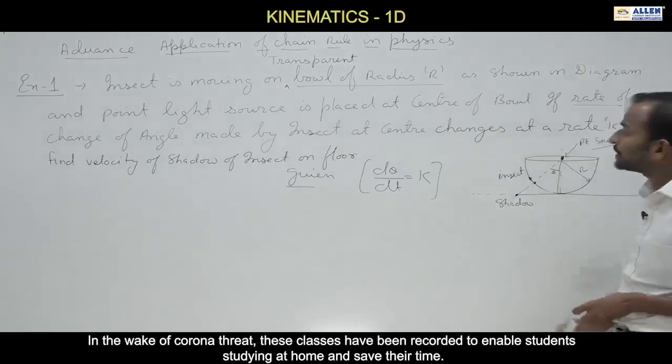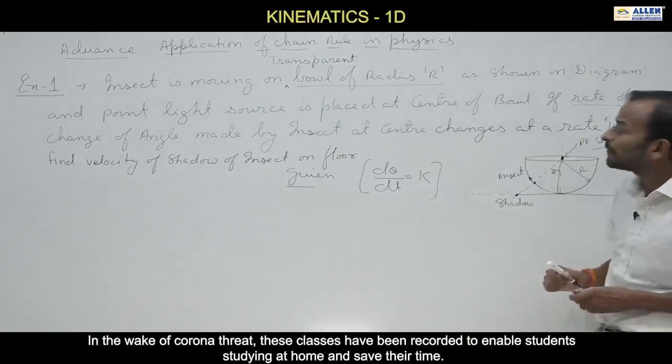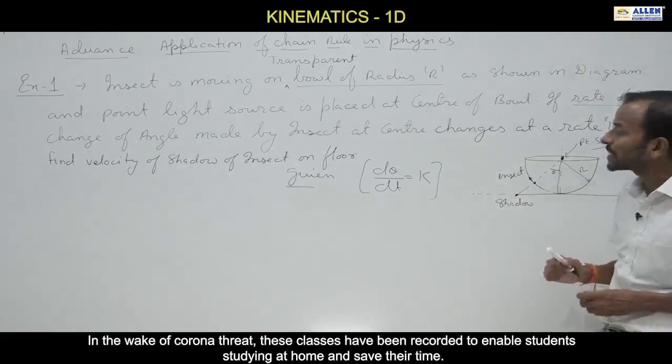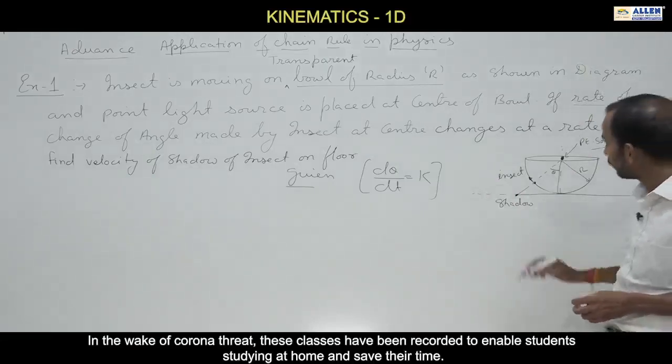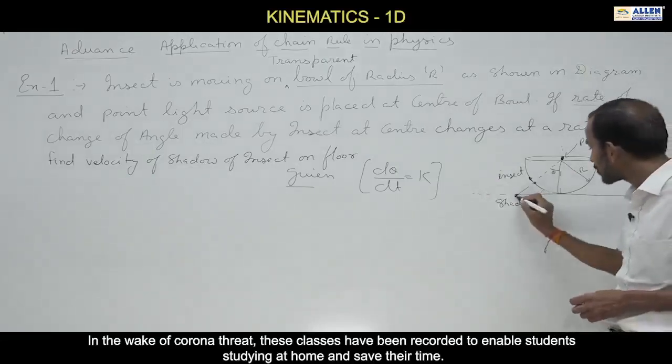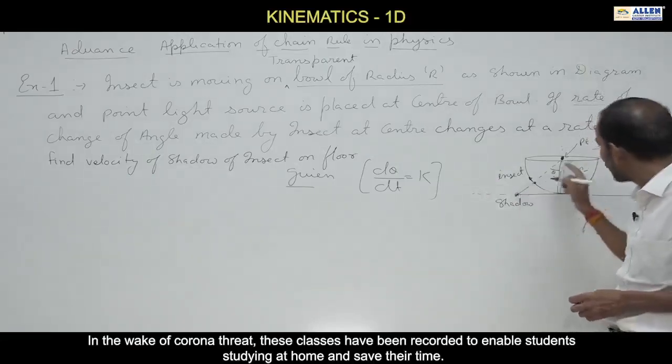Now, find the velocity of the shadow of the insect on the floor. The shadow is moving on the x-axis, so we need dx/dt — how fast the position of the shadow is changing with respect to time gives the velocity.